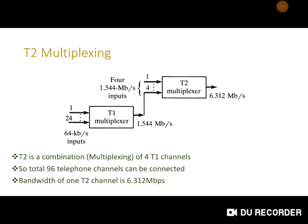Going further in the hierarchy, after T1 there is the T2 multiplexer. In T2, four channels — each carrying a T1 output of 1.544 Mbps — are combined, resulting in a total output of 6.312 Mbps. T2 multiplexers are utilized with optical fiber for this transmission.